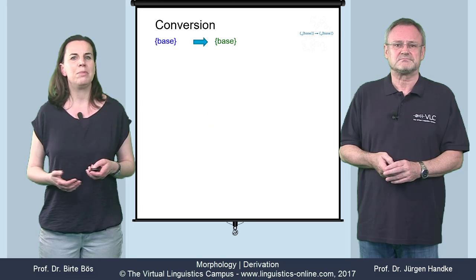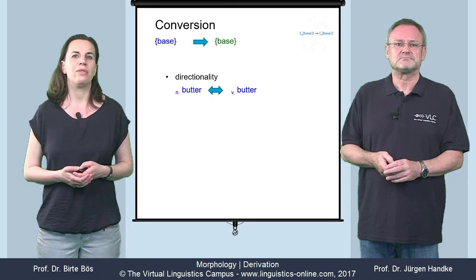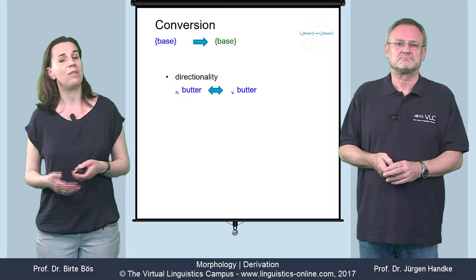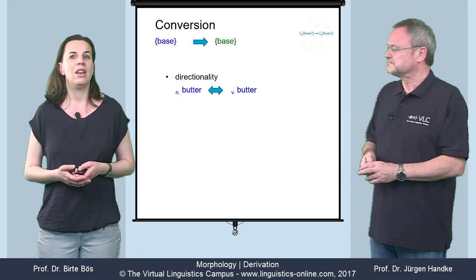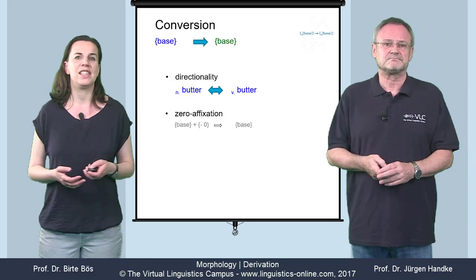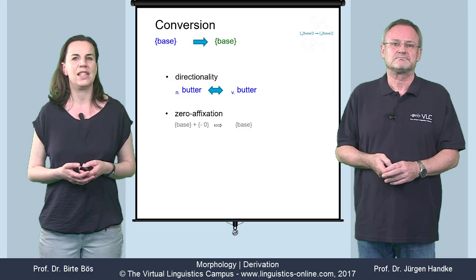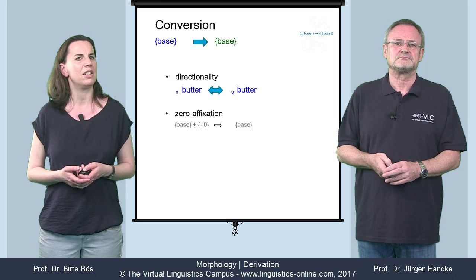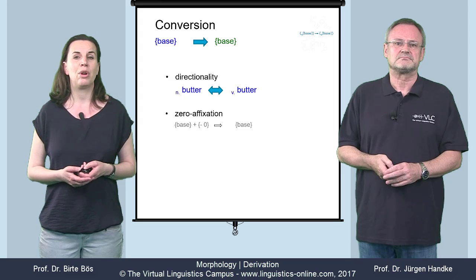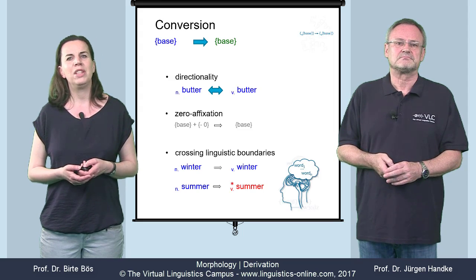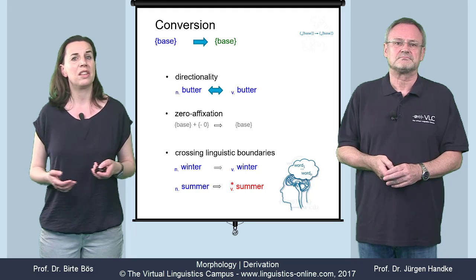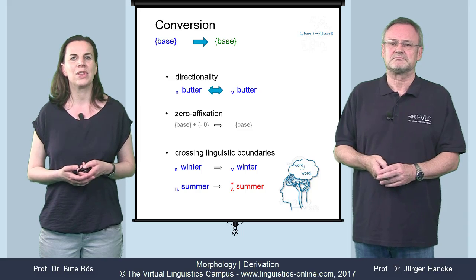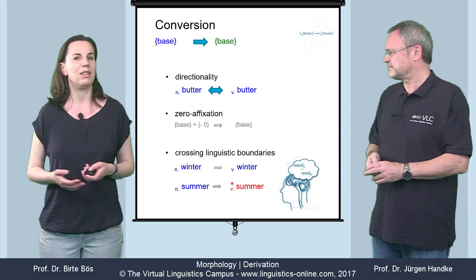Conversion raises three major problems. Problem one: the problem of directionality — how can we decide whether it's the verb that is derived from the noun or vice versa? Problem two: the problem of zero-affixation — could it be possible to treat conversion as zero-affixation and reduce different morphological operations to just concatenation? Problem three: the problem of crossing linguistic boundaries — how can we define that winter / to winter is possible, but summer / to summer is not? Without reference to other linguistic levels, for example syntax or semantics, this is hardly possible.